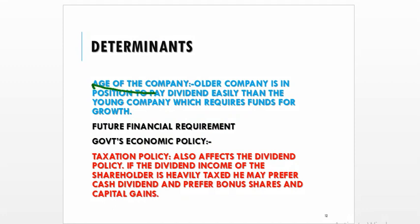The dividend policy is also influenced by the age of the company. Older companies which have already established their business and are earning stable income can pay dividend more easily than young companies, which require funds for growth and have not yet generated sufficient profit. Young companies require lots of funds for growth, so they have to adopt a conservative dividend policy.